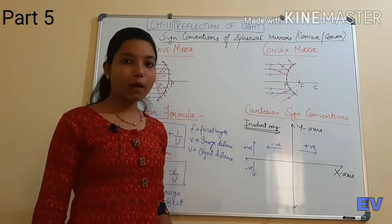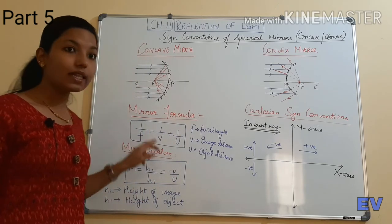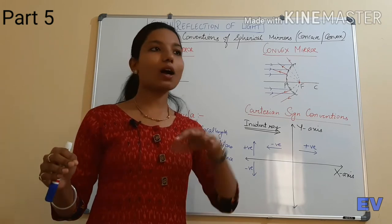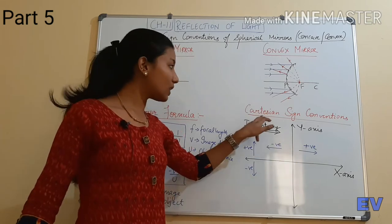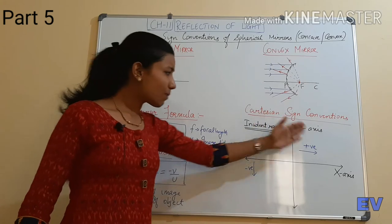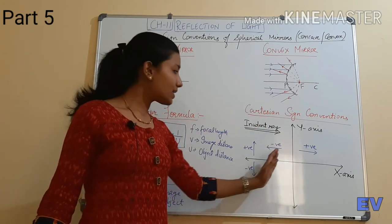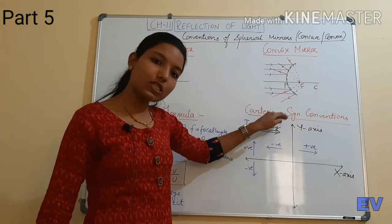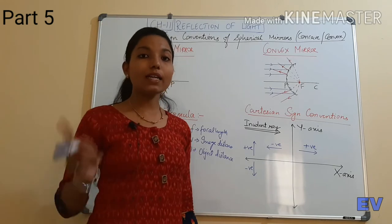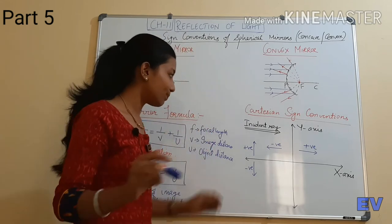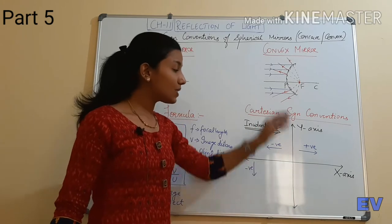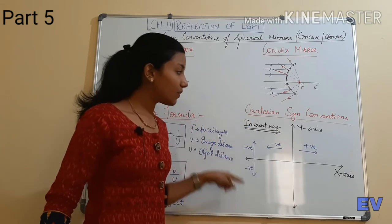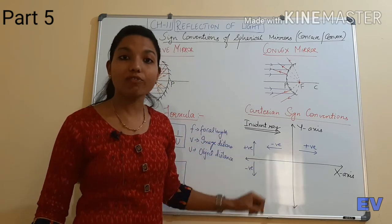Now let's see what sign conventions are. Object distance, image distance, focal length — these are not always positive; sometimes they are negative. Cartesian sign conventions tell us when to take each as positive or negative. Remember one key thing: all these sign conventions are based only upon the direction of the incident ray.